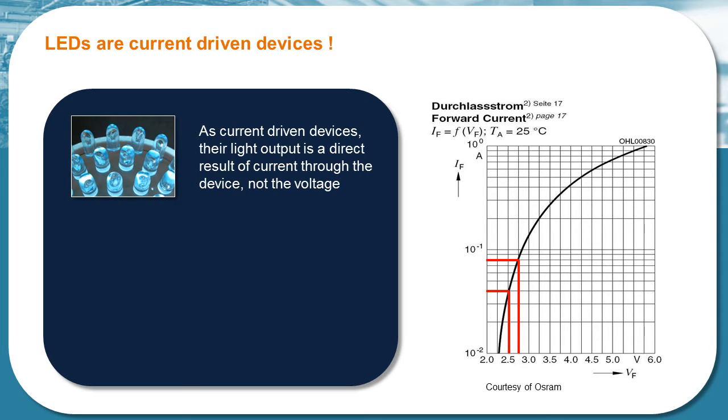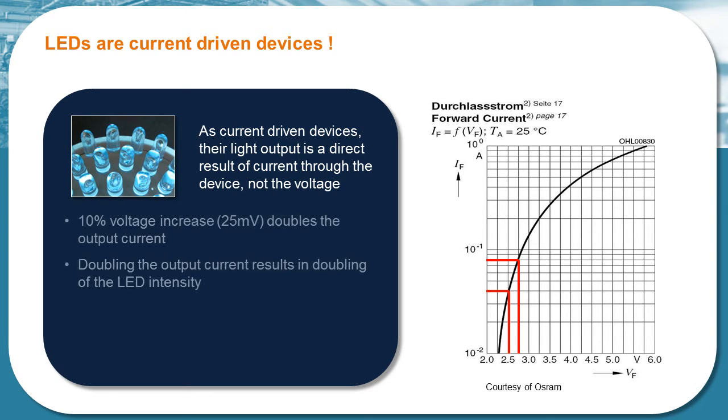This graph shows that small changes in voltage results in large change in current and therefore light intensity. So by driving LEDs with a voltage supply there will be more noise in the output. 10% voltage increase, 25 millivolts, results in doubling the output current.